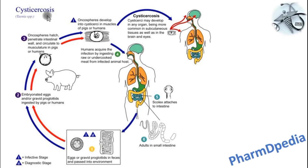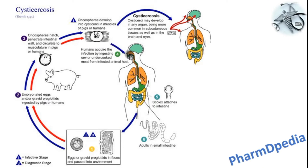Life cycle of Cysticercosis: As discussed earlier, the main reason for cysticercosis is the accidental ingestion of Taenia solium eggs. If these eggs are ingested by a pig, the pig gets affected with this disease. If a human being then consumes this infected pork meat, they acquire the infection. Cysticercosis may develop in any part of the body, especially in subcutaneous tissues, brain, and eye.